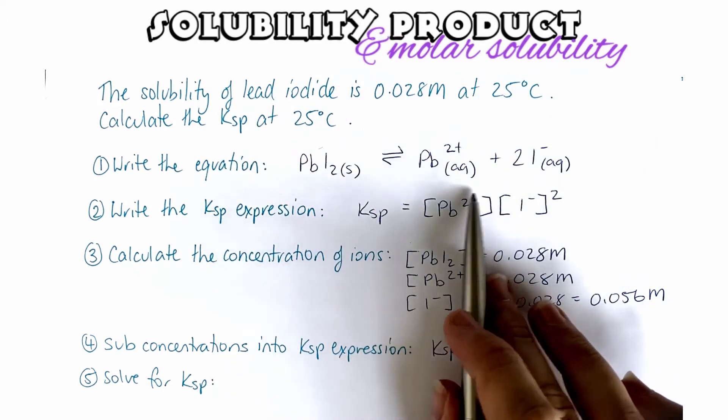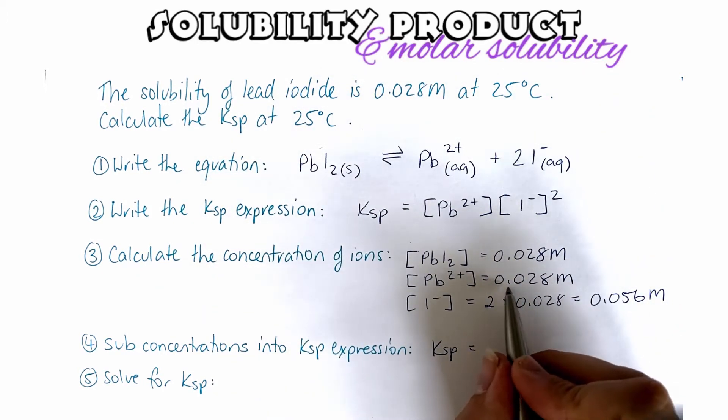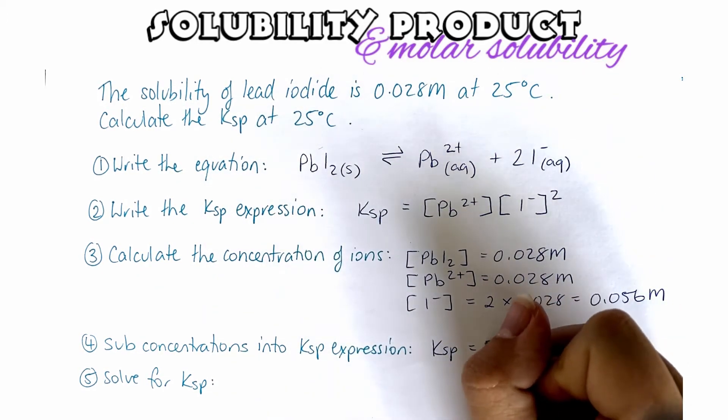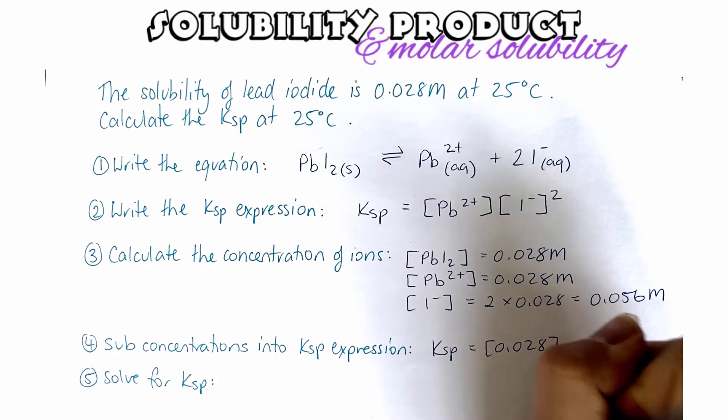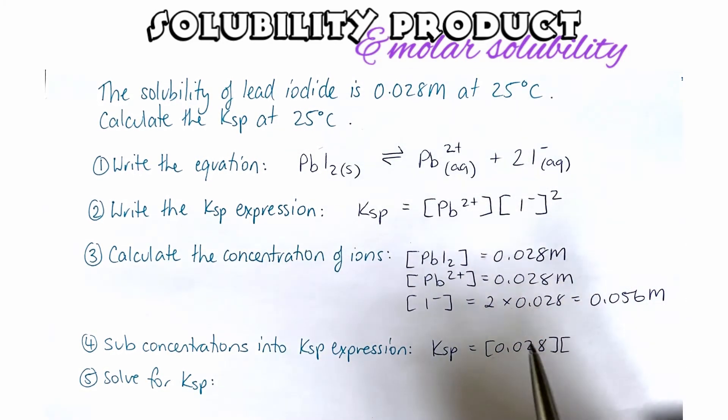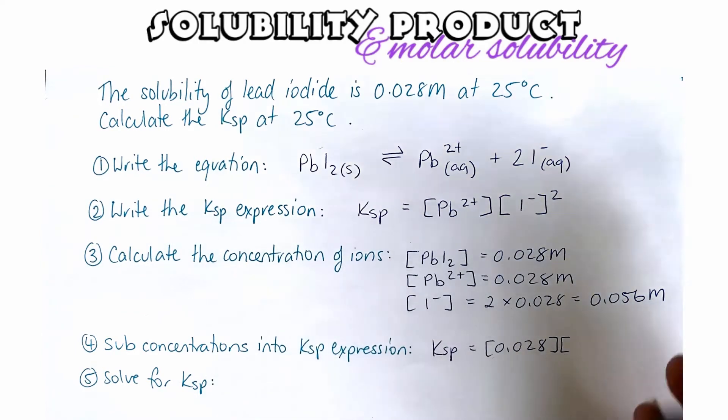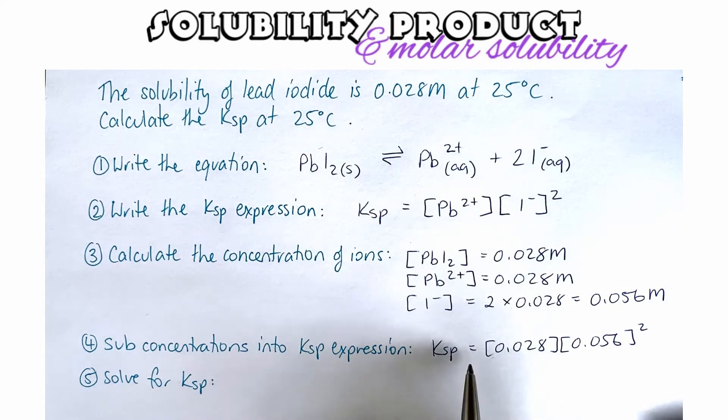...is going to be our concentration of our lead, which is going to be 0.028, multiplied by the concentration of our iodide to the power of two. Now all we have to do is put that in the calculator to solve the Ksp.